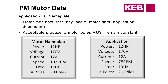Here's an example of application versus nameplate data taken from actual motor data. They de-rated it: in one application from the nameplate they were running at 102 RPM, but for the new application they wanted it down to 78. To do that, the frequency was changed from 17 Hz down to 13 Hz. The number of motor poles remained constant, and motor current, power, and voltage also remained constant.